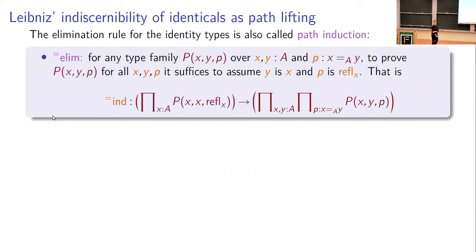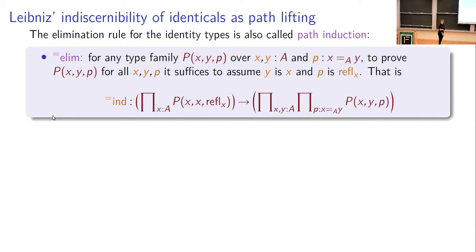This gives us a new perspective on what the elimination rule for the identity type was actually doing. It's a strategy for proving universally quantified statements: for all X, Y in A, for all proofs that X is equal to Y, then some type built from that information is inhabited. To prove a statement like that, it suffices only to check it in the case where Y and X are equal and the path is the constant path or reflexivity. This is called path induction, and it connects back to one of the axioms for equality in first-order logic — the indiscernibility of identicals after Leibniz.